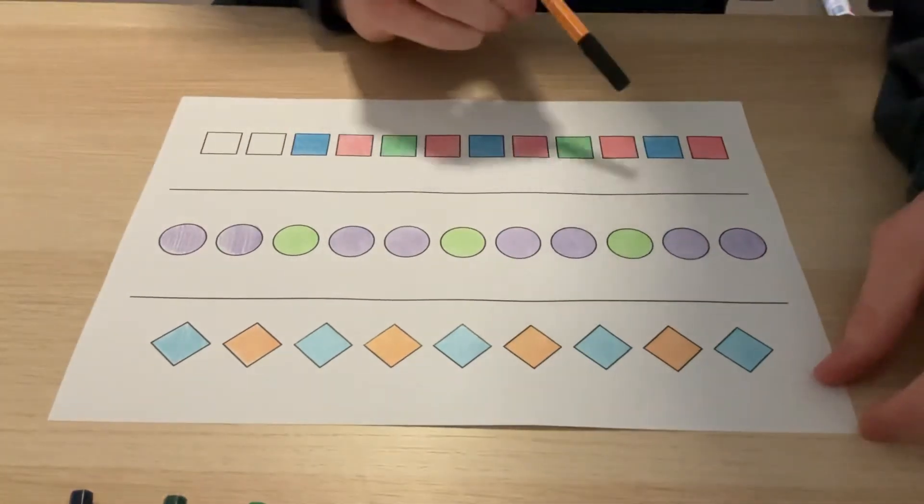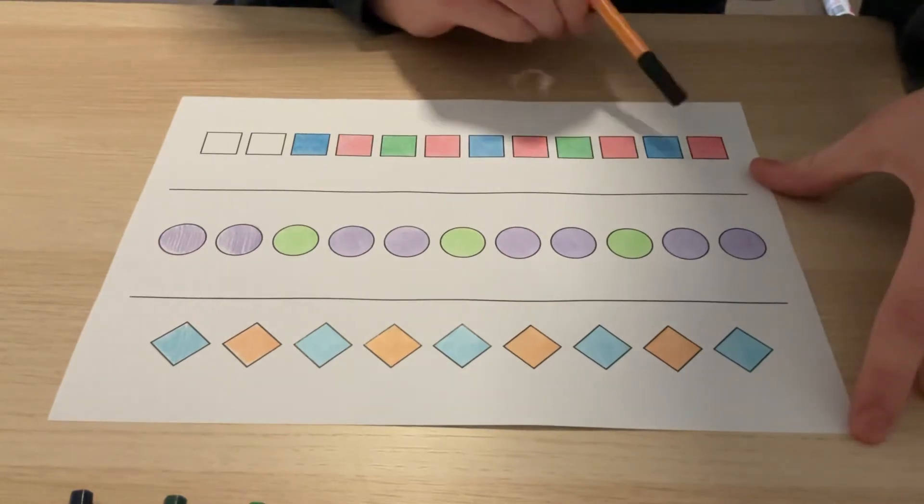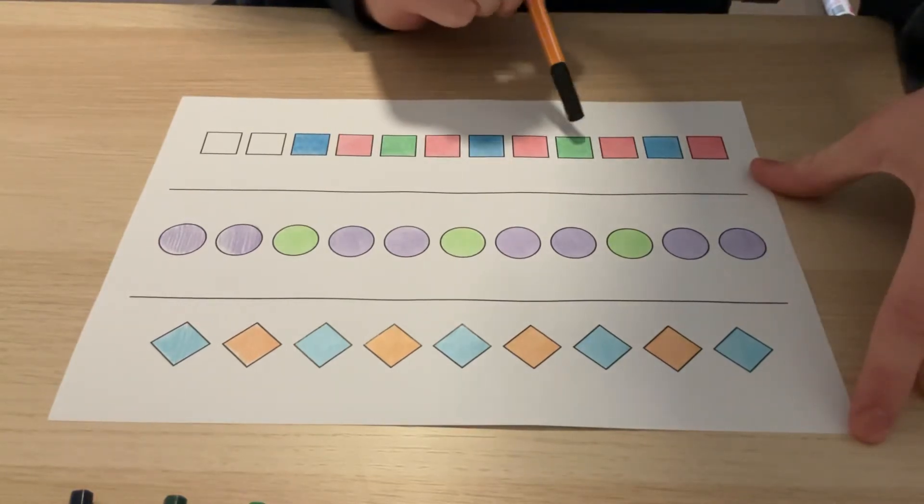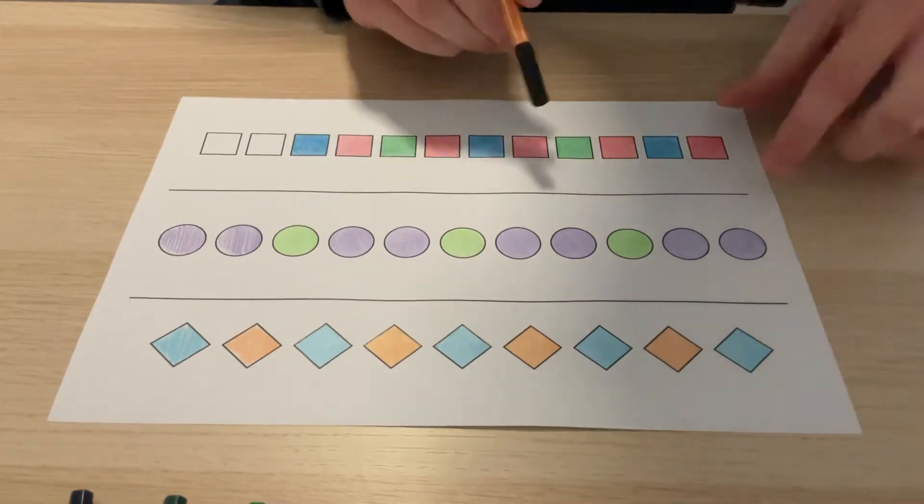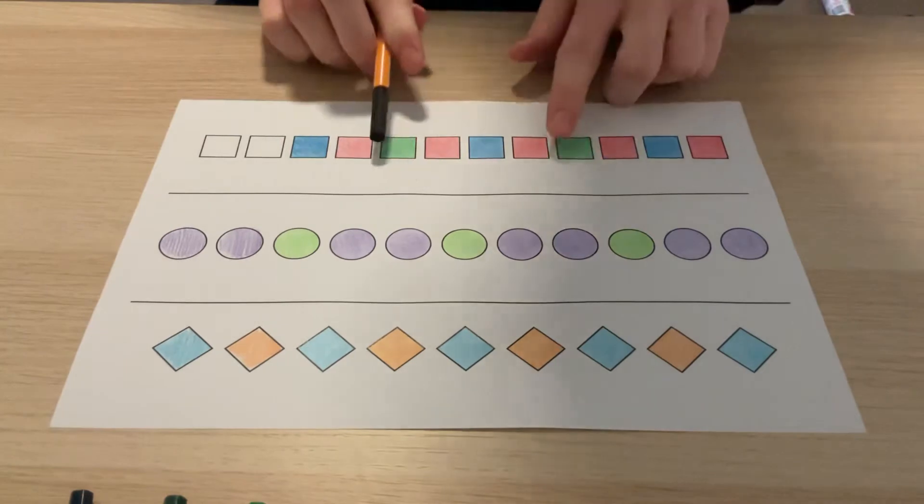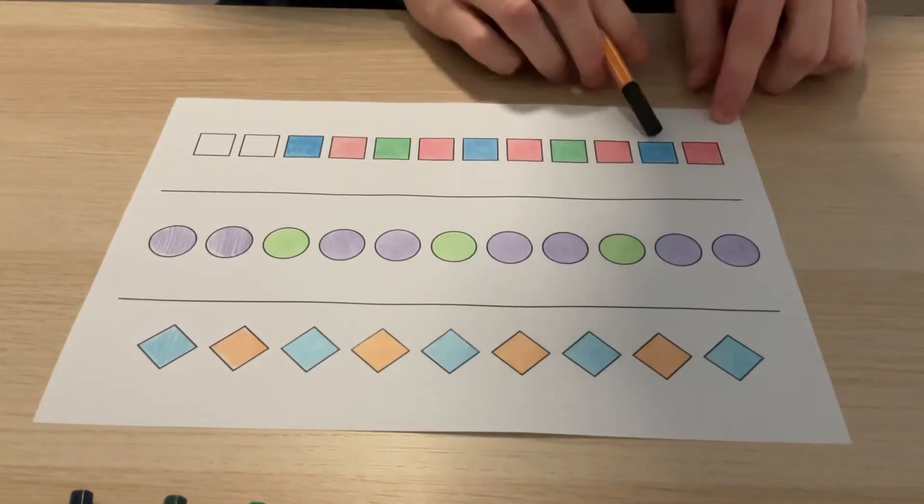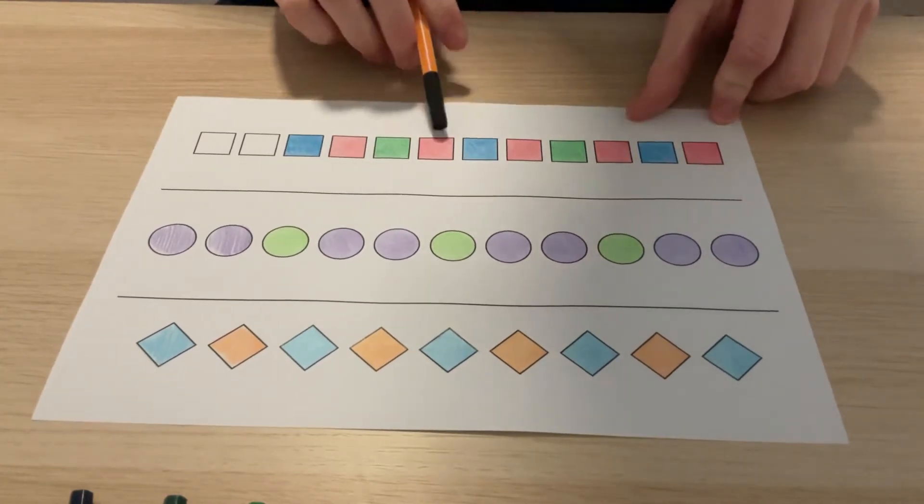And then down here is an even trickier one. So it's red, blue, red, green, red, blue, red, green. So this is our sequence here, this is where it repeats again. So red, blue, red, green, red, blue, red, green.